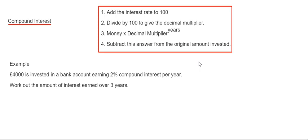First step then is to add the interest rate to 100. We go 100 add our interest rate which is 2%, that gives us 102%. So we then divide this answer by 100, so that will give you 1.02. This is the decimal multiplier.